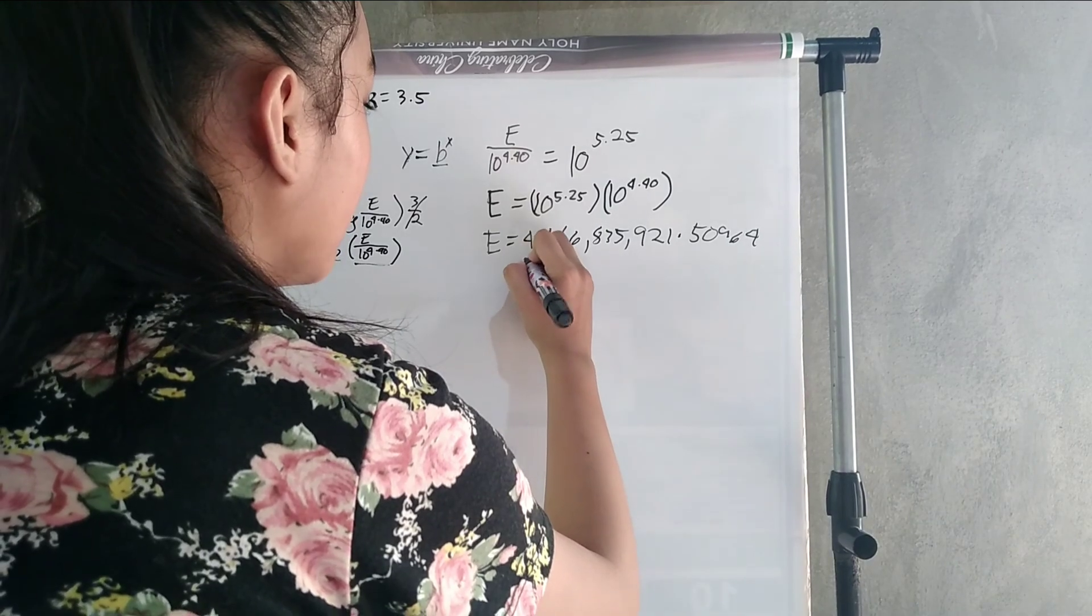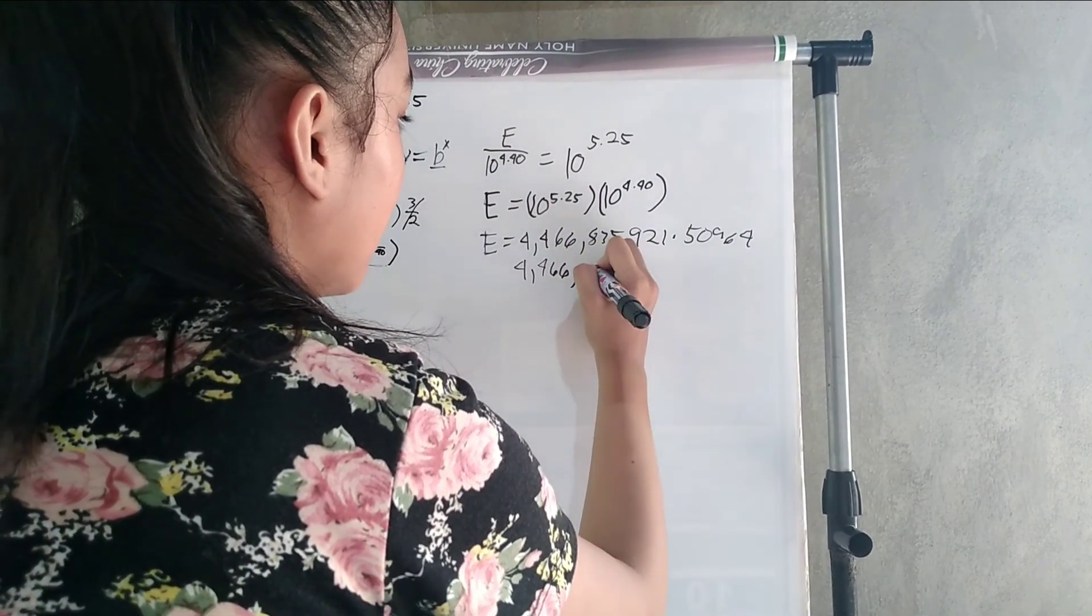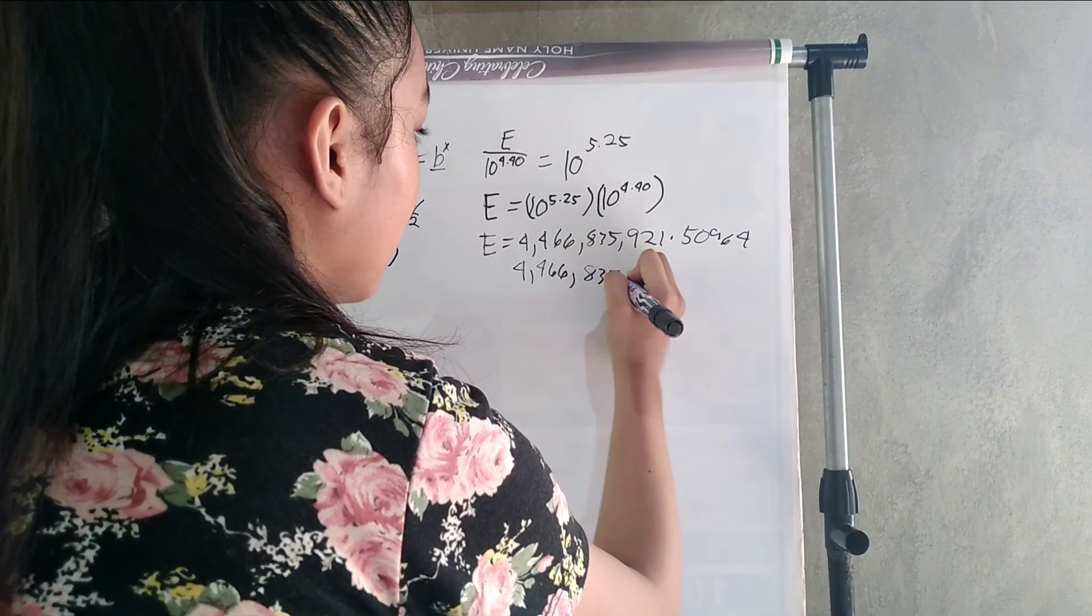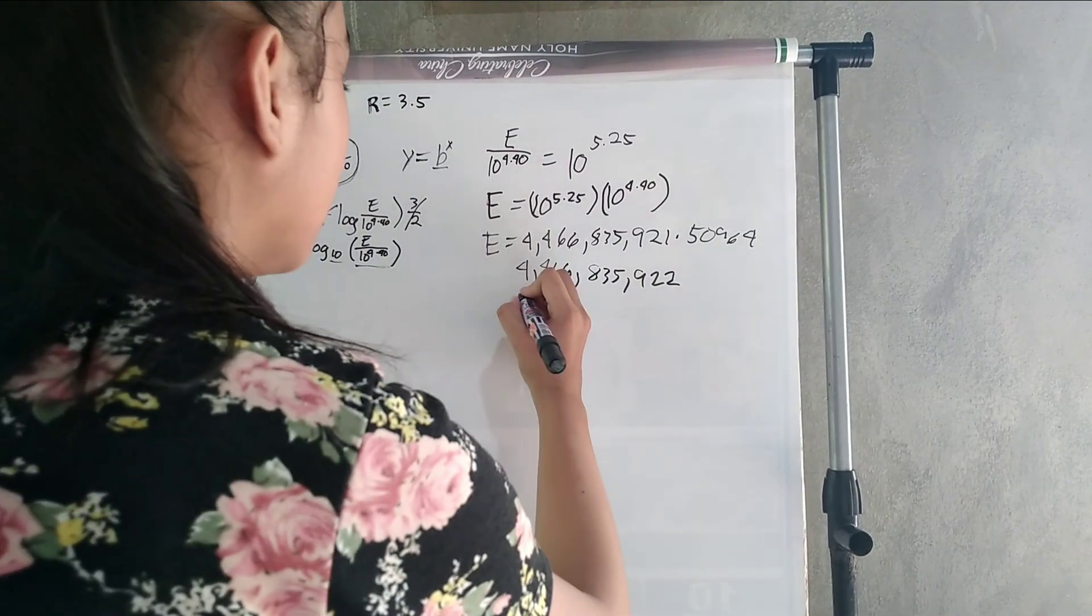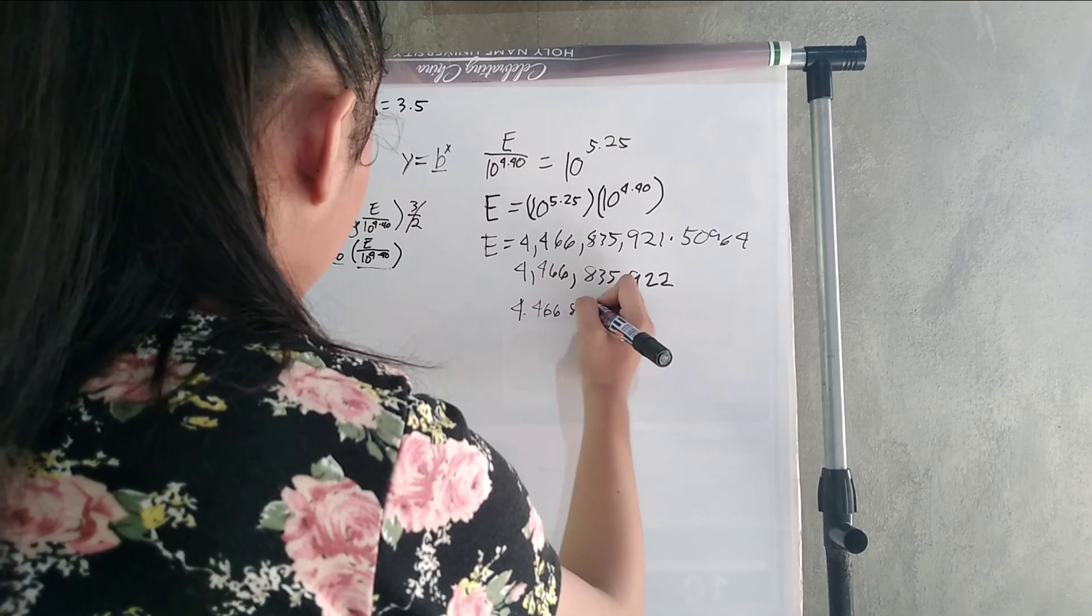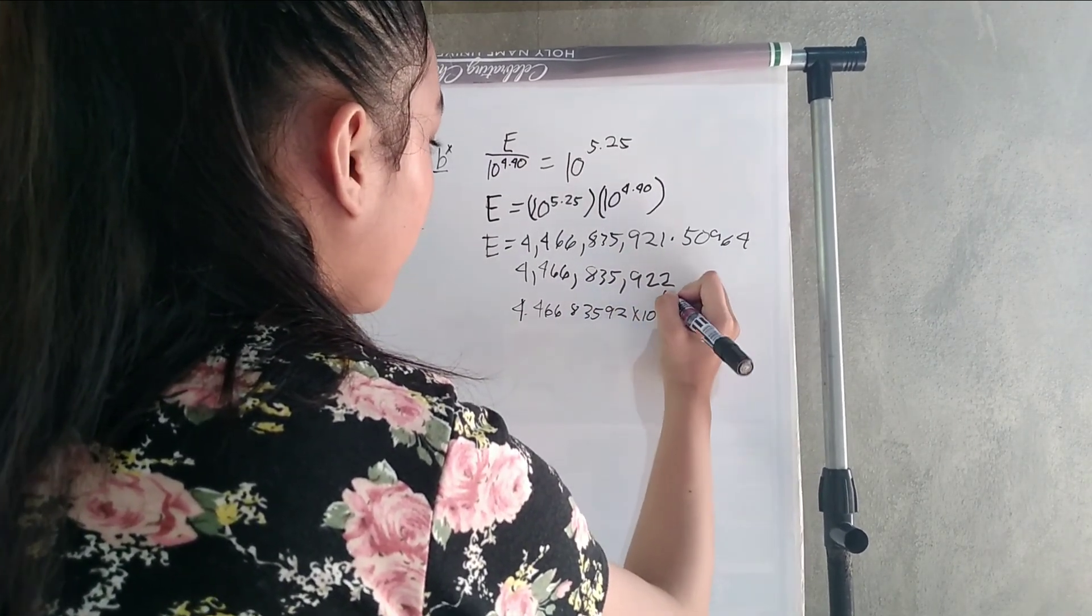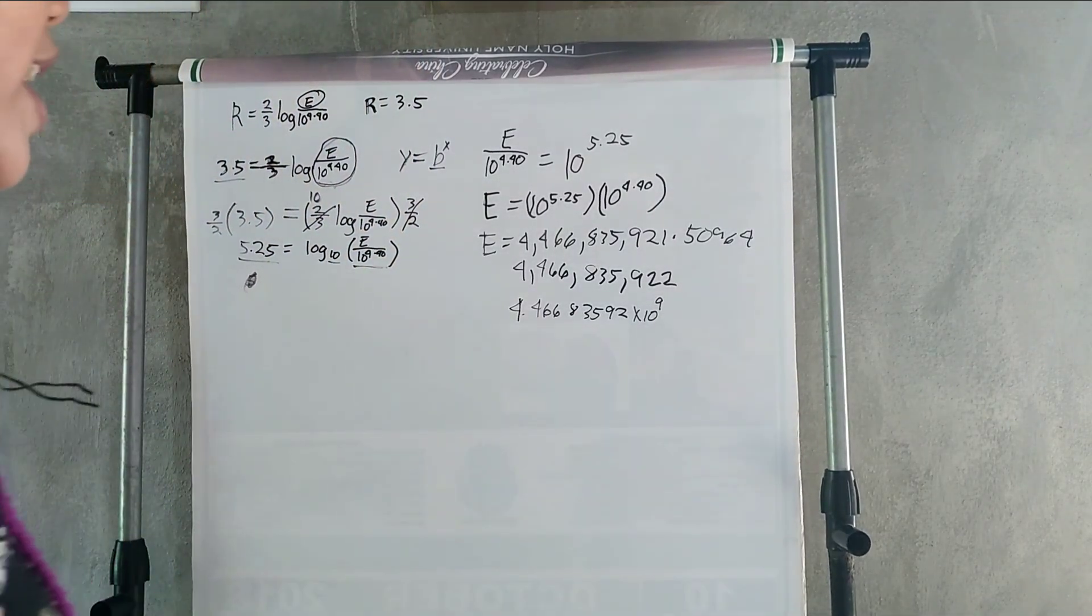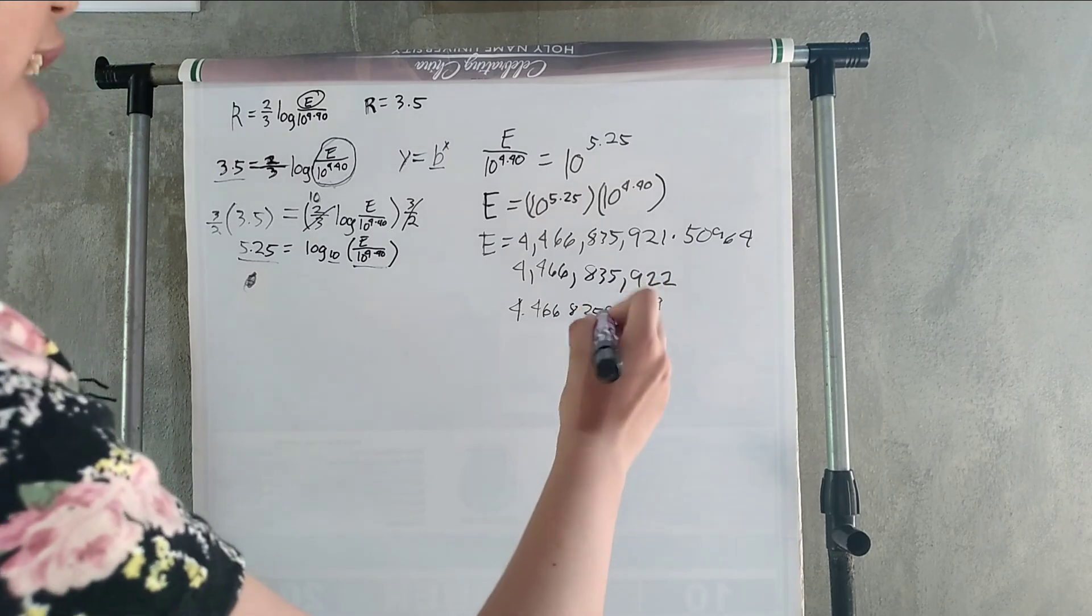Or in scientific notations, it's going to be 4.466835922 times 10 to the power of 9.